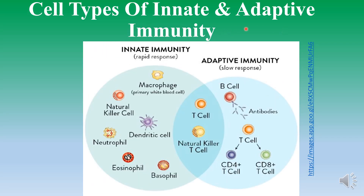Here you can see the components of innate immunity in a diagram. Innate immunity has a rapid response while adaptive immunity has a slow response. Innate immunity involves cells like macrophages, natural killer cells, neutrophils, dendritic cells, eosinophils, and basophils. Adaptive immunity is mediated by antibodies generated by B cells, T cells, and natural killer T cells. These are the different components of the immune system.